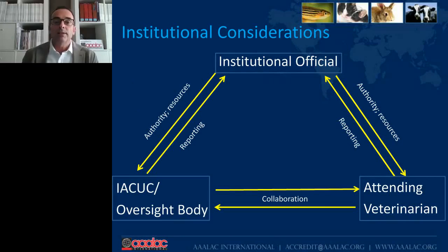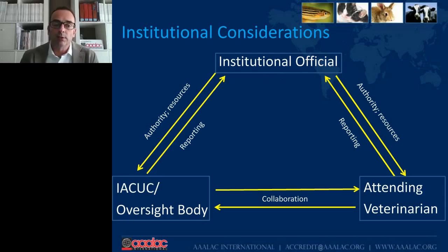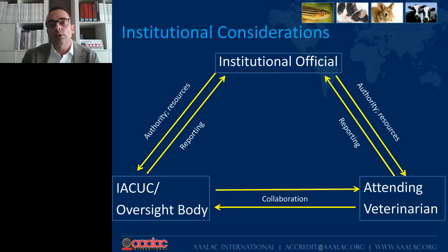The first area relates to institutional considerations. In the structure of the institution, there are three key elements we evaluate. One is the institutional official — the person at the institution with enough power and authority, to whom both the IACUC equivalent and the attending or designated veterinarian report. The second is the attending or designated veterinarian. The third is the body, bodies, or persons in charge of the ethical review process.